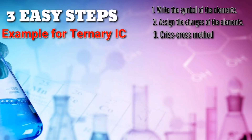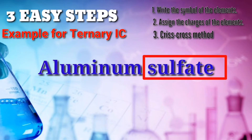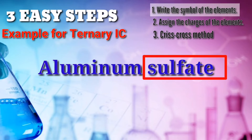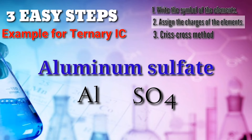Now, let's have an example of a ternary ionic compound. We have aluminum sulfate. It is a ternary ionic compound because sulfate is a polyatomic ion. Now, let's have the first step: write the symbol of the elements. Aluminum is Al, and sulfate is SO4. If you are not familiar with the symbols, just use a periodic table as your reference. Second step: assign the charges of the elements. Aluminum is positive 3 and sulfate is negative 2.